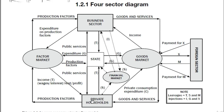The first leakage is savings, shown by this dotted line. When private households decide not to consume all their income received from businesses — for example, if an individual receives 100 rand and decides to consume 60 rand and save 40 rand — that saved money goes to the financial market. The financial market includes banks, insurance companies, and other financial institutions. That money becomes available in the financial market, which is a leakage from the circular flow.